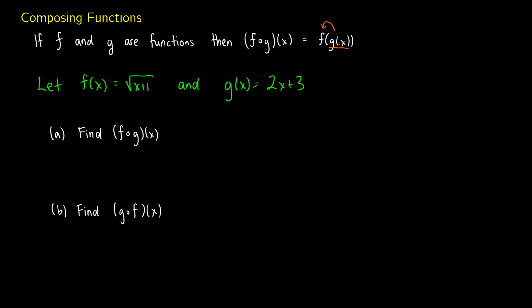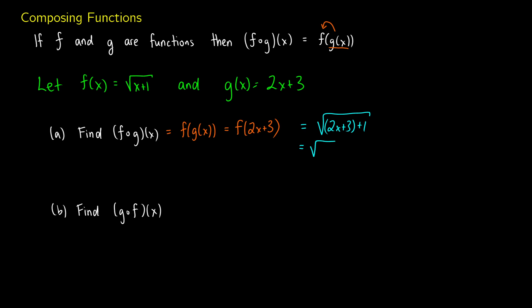First, find f dot g of x, which is the same thing as f of g of x. We're going to take our function f and put 2x plus 3 into every place where we have x. So in our original function f of x equals the square root of x plus one, x becomes 2x plus 3 and then we add one. So this is going to be the square root of 2x plus 4.